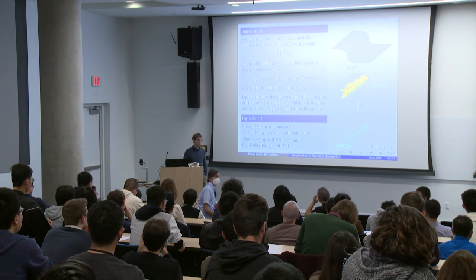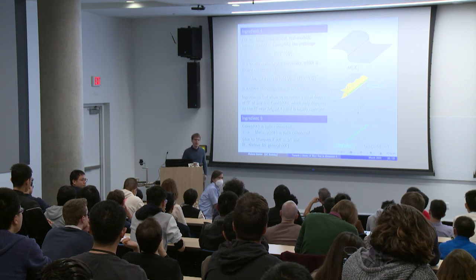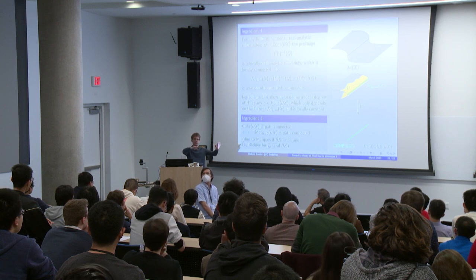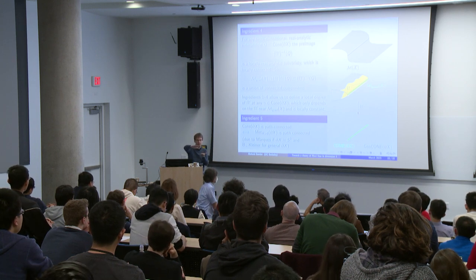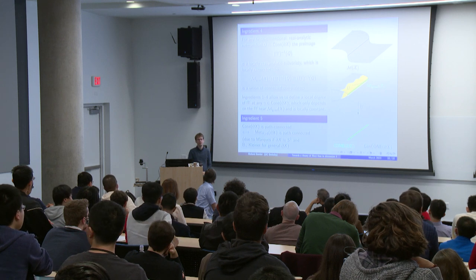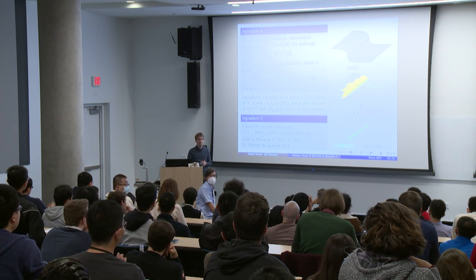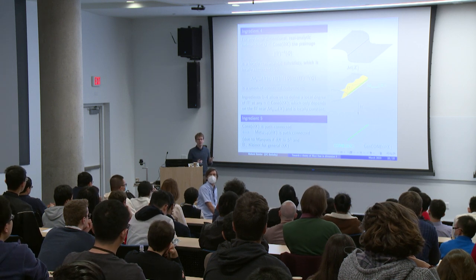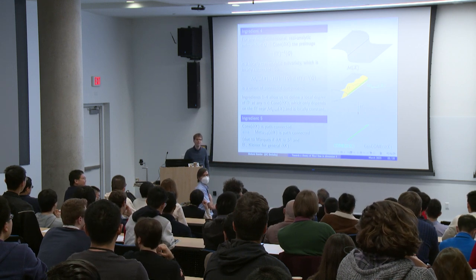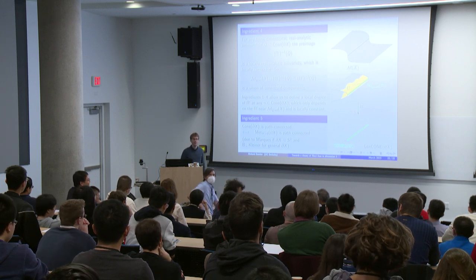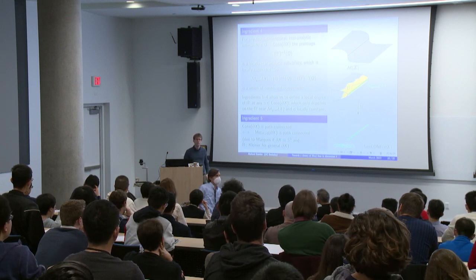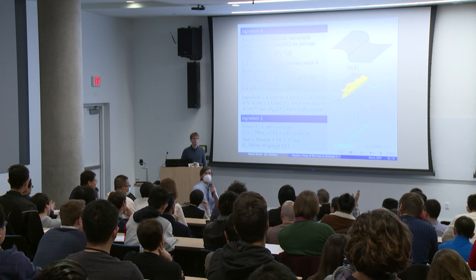Regarding whether there are more shrinkers: I would expect so. I expect there might be a shrinker asymptotic to a cone over some kind of neck-pinch — near the neck-pinch it's asymptotic to S² × ℝ², but blowing it down it looks like a cone over a three-dimensional neck-pinch. I'm about 52 percent confident something like that exists. In mean curvature flow there are many shrinkers, so I expect there are more here too.